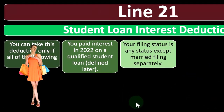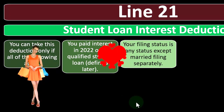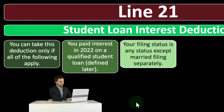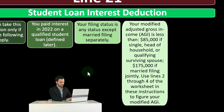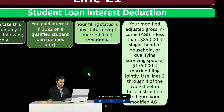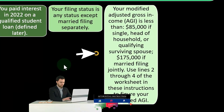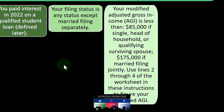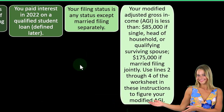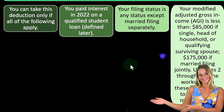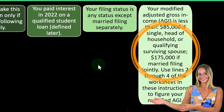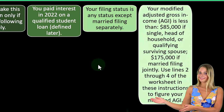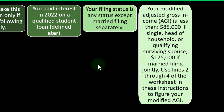The IRS is skeptical of married taxpayers filing separately to take advantage of income thresholds on deductions like student loan interest. Additionally, your modified Adjusted Gross Income must be less than $85,000 if single, head of household, or qualified surviving spouse, or less than $175,000 if married filing jointly. Use lines 2 through 4 of the worksheet in the instructions to figure your modified AGI. The deduction phases out as income rises past these thresholds.